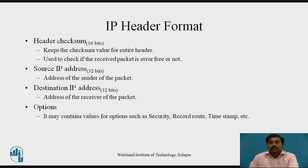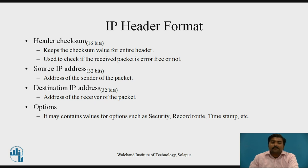The source IP address is 32 bits and is the address of the sender of the packet. Similarly, the destination IP address is 32 bits and is the address of the receiver of the packet. The last field is the options field, which may contain values for options such as security, record route, timestamp, etc.